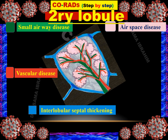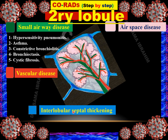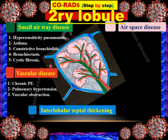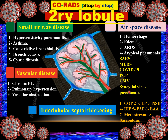The surrounding septa, shown in blue, contain lymphatic and venous drainage. If there is any pathology of this lymphatic or venous drainage, it causes interlobular septal thickening. Diseases causing small airway disease include hypersensitivity pneumonia; terminal arterial disease includes chronic pulmonary embolism; airspace disease represents pneumonia, edema, acute respiratory distress syndrome, or COVID; and interlobular septal thickening represents venous or lymphatic pathology like lymphatic carcinomatosis, sarcoidosis, or pulmonary edema.